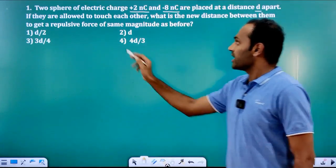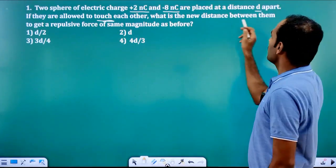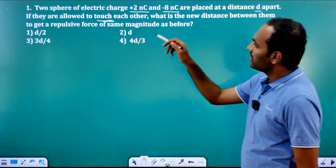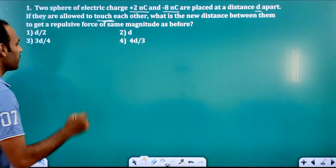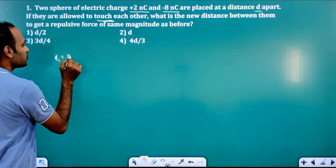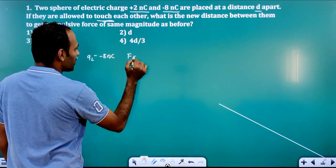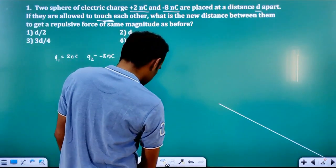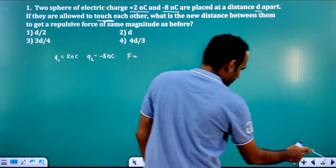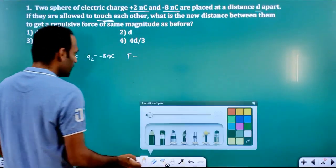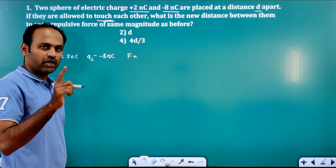If they are allowed to touch each other and then separated, what is the new distance between them to get the force of same magnitude as before? So let us find that force. F is equal to 1 by 4 pi epsilon naught, Q1 into Q2 divided by R square. We cannot change the medium in this situation. We will change the charges and distance.